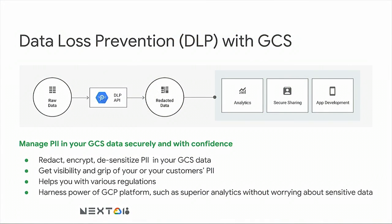PII — personally identifiable information — is a very important and topical subject right now. It is the cornerstone around which regulations such as GDPR are formulated. In our platform, we have Data Loss Prevention APIs (DLP) which allow you to effectively redact, encrypt, and pseudo-anonymize your PII, giving you a very good grip on how your PII is handled. It allows you to analyze, visualize, and effectively manage your PII.